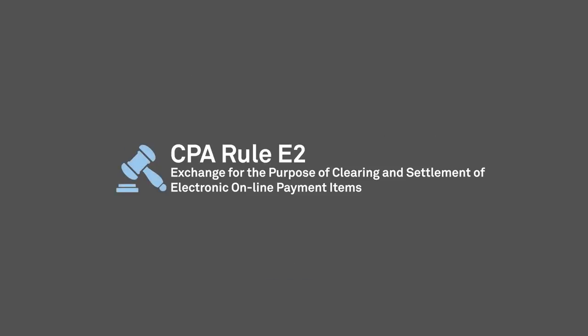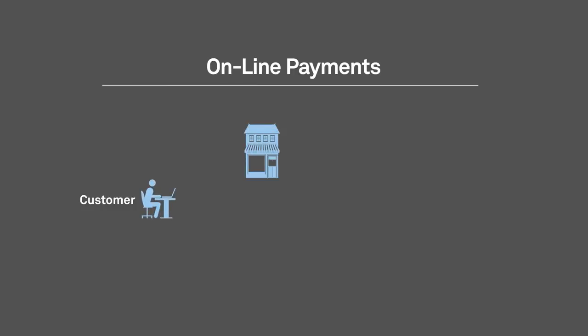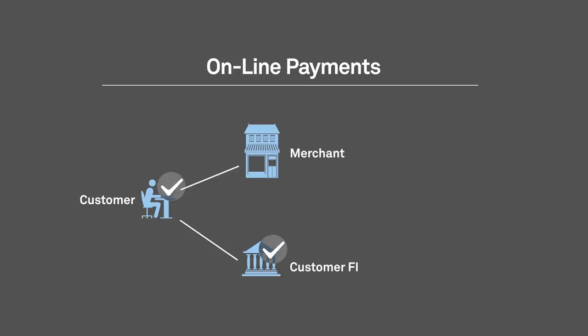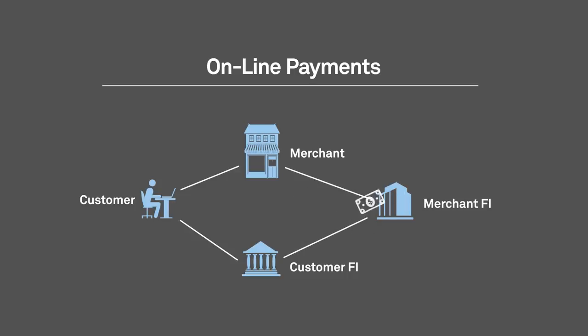Online payments are governed by Rule E2 and are made over the Internet. They are initiated by a customer who, while visiting a merchant's website, orders goods or services and chooses to pay using the merchant's online payment service. During the payment process, a connection is established to the customer's online banking interface, allowing the customer to authenticate their identity by signing in and giving them the opportunity to review and authorize the payment transaction. An online payment is essentially an order from the customer to their FI to send a payment from their account to the merchant's account. Online payment refunds can be initiated by a merchant to credit a customer's account in the case of refunds or merchandise returns.